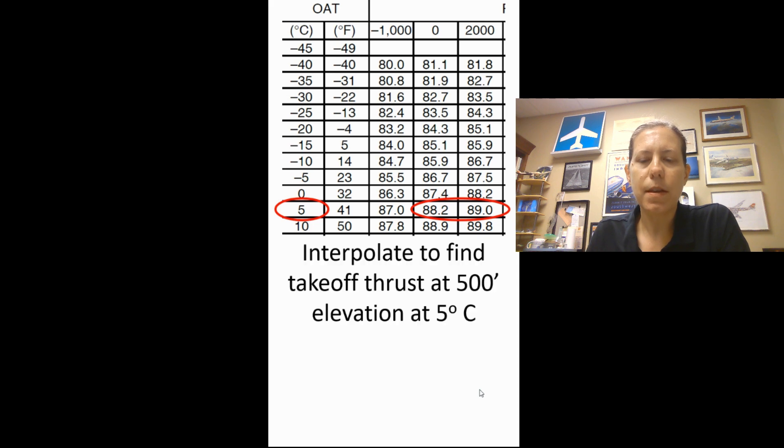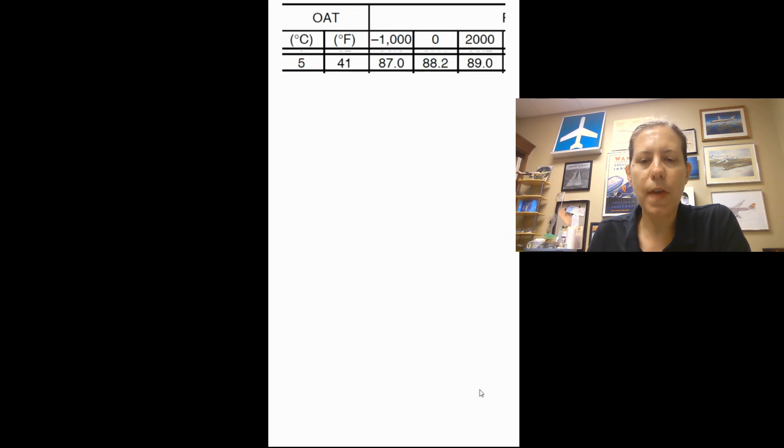I need to find between these two numbers right here, 88.2 and 89. So in order to do that, I'm going to take the difference. I take the smaller number, subtract it from the bigger number, and I get 0.8. That's 0.8 for the 1,000 feet between 0 and 2,000 foot field elevation.